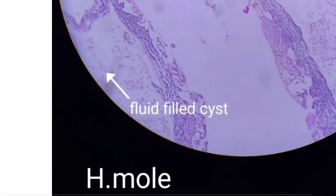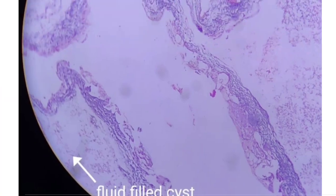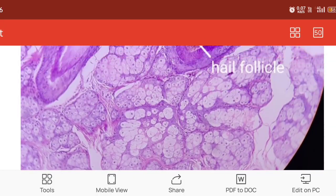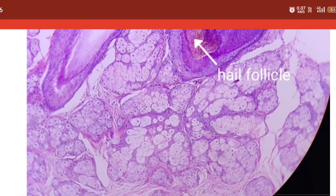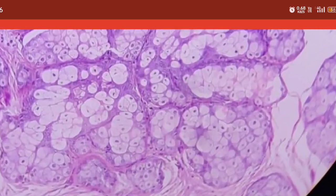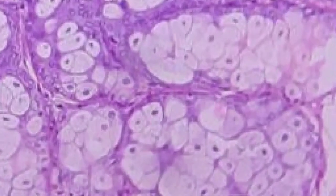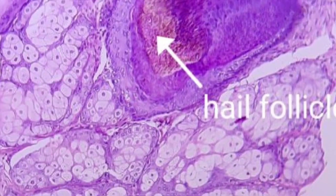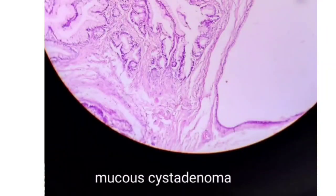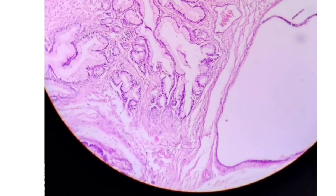In this teratoma slide, you can see a fluid-filled cyst along with cytotrophoblast and syncytiotrophoblast. Here you can see the hair follicle and adipose tissue — the fat appears washed off on staining. This is the hair follicle in teratoma.